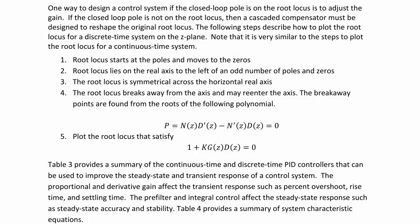The root locus starts at the open loop poles and moves to the open loop zeros. It lies on the real axis to the left of an odd number of open loop transfer function poles and zeros, and is symmetrical about the horizontal real axis. The root locus breaks away from or enters the axis based on the polynomial: N(Z)·D'(Z) minus N'(Z)·D(Z) equals zero. The plot must satisfy 1 plus K·G(Z)·D(Z) equals zero — the magnitude and angle criteria.